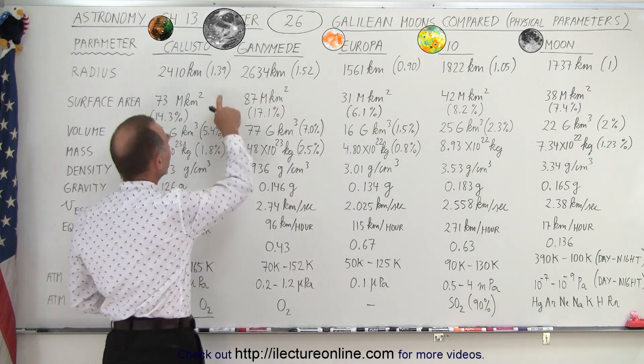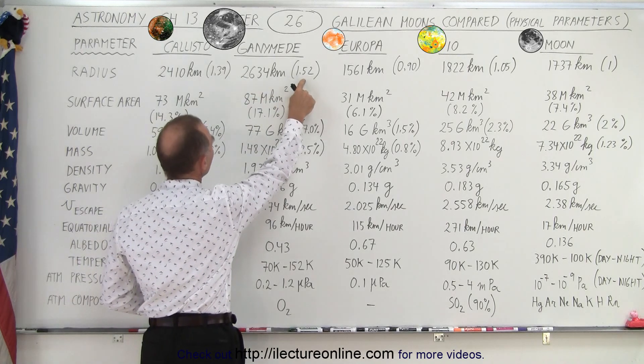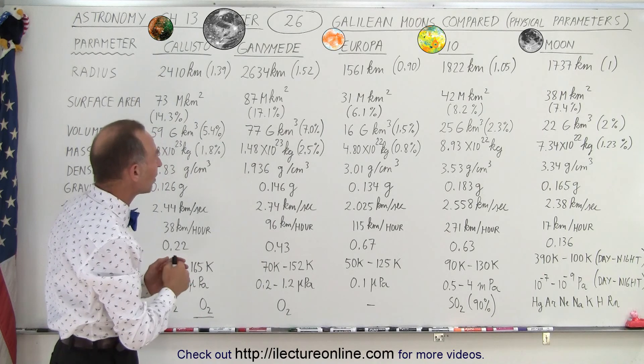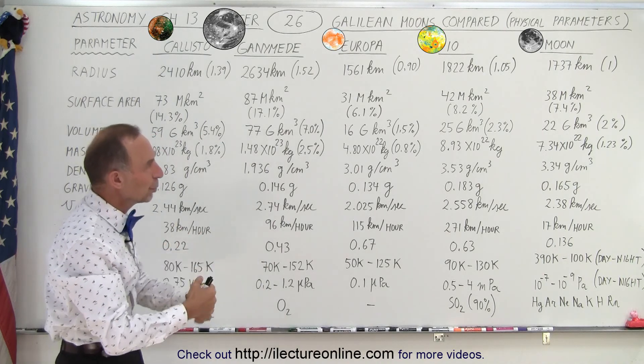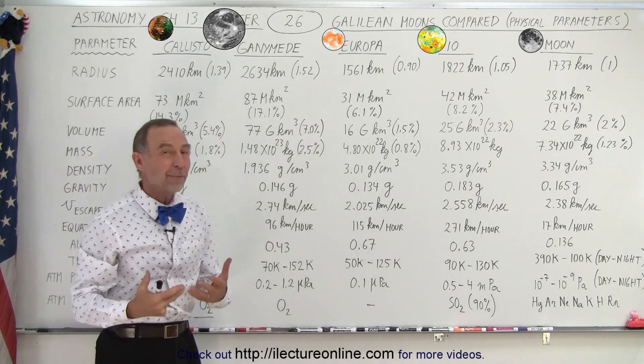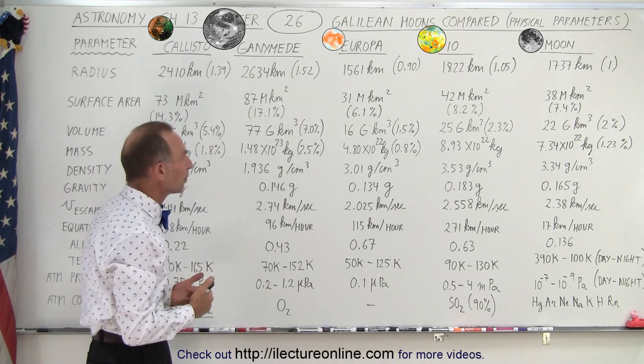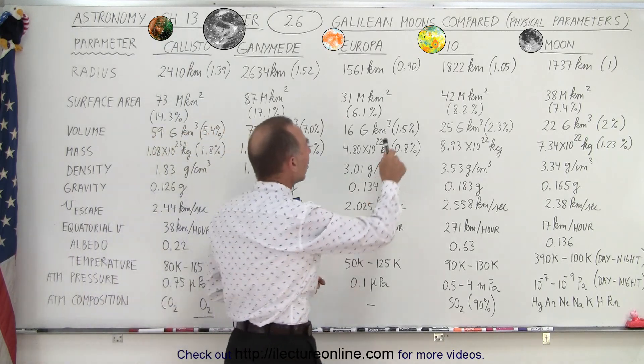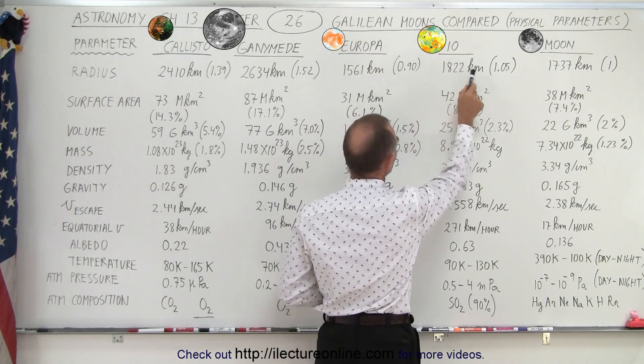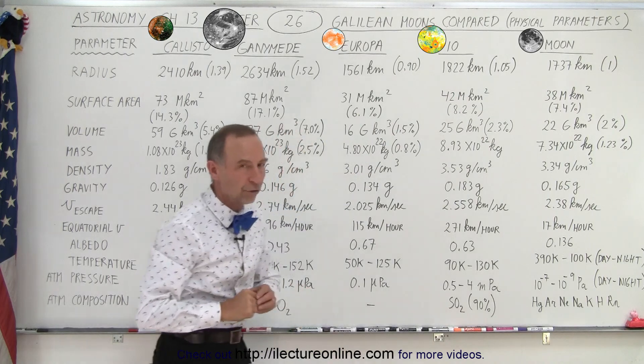Notice that both Callisto and Ganymede are considerably larger than the moon. That number inside the parentheses indicates relative to the moon, the moon being one. Notice that Ganymede has about a 50% greater radius than the moon. When it comes to Europa and Io, they're very similar in size. Europa is slightly smaller than the moon and Io is slightly larger than the moon.